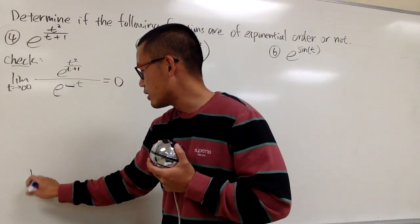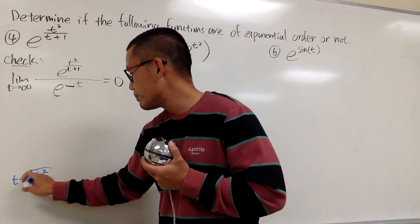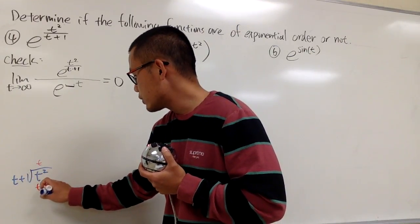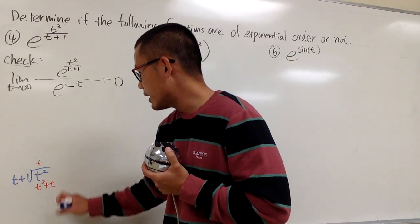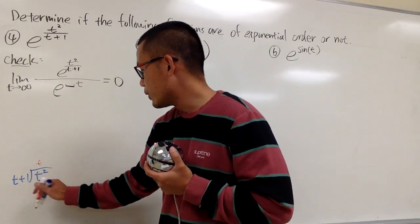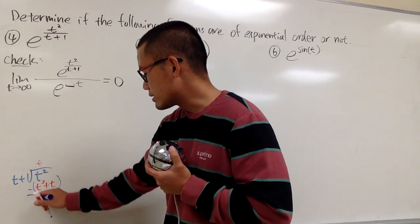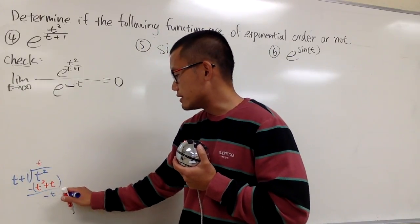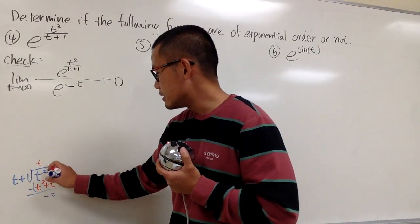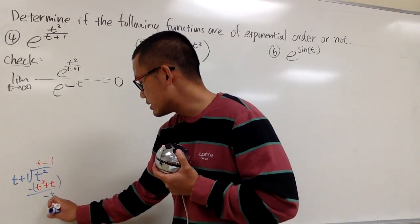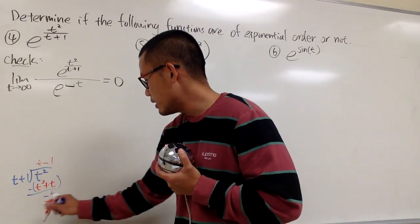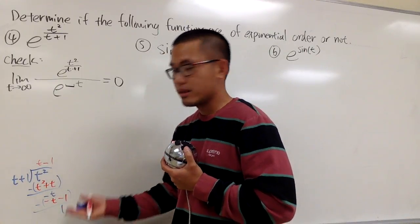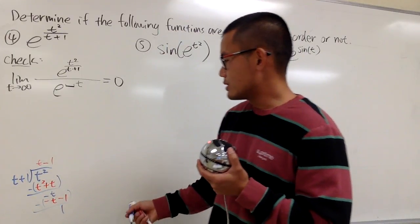If we divide t squared by t plus 1, I put down t right here, because t times t gives us t squared. t times that is just plus t. We subtract, and we get negative t. Then we put down minus 1: minus 1 times t is negative t, minus 1 times 1 is negative 1. Subtract again — that's gone, and 0 minus negative 1 gives us 1 as remainder.